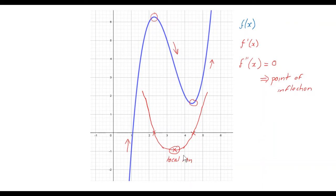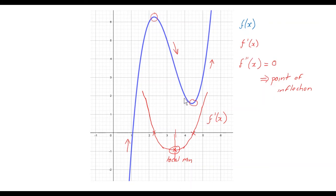Some of you might realize that because the gradient function f'(x) is a quadratic, its minimum point is midway between the two zeros. That means the point of inflection on the cubic is midway between the maximum and the minimum point. This works for cubic graphs, but it doesn't always hold generally — points of inflection are not always the midpoint between the nearest local maximum and minimum.